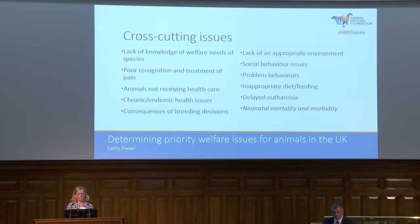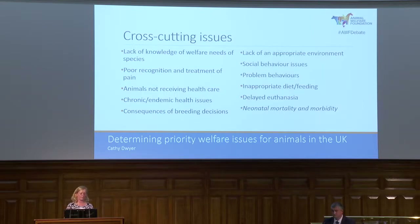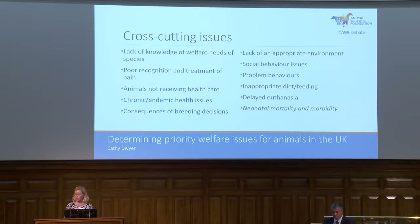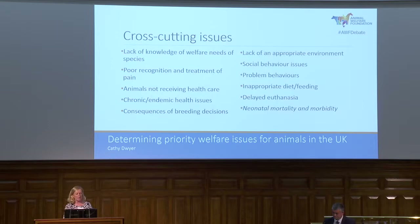Consequences of breeding decisions came up — in dogs, cats, and rabbits bred for flat faces, but also in poultry and pigs. Lack of an appropriate environment, with consequences for social and problem behaviours. Inability to feed animals appropriately — either by diet or feeding mechanism. This may seem like we're just rediscovering the five freedoms, but we are not feeding animals in any of these groups appropriately. Delayed euthanasia is also an issue. Finally, neonatal mortality and morbidity was prioritised by all the farm animal groups, and there was discussion about how this is also an issue for exotics and potentially for animals from puppy farms.